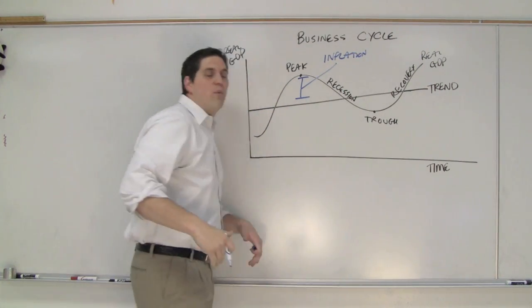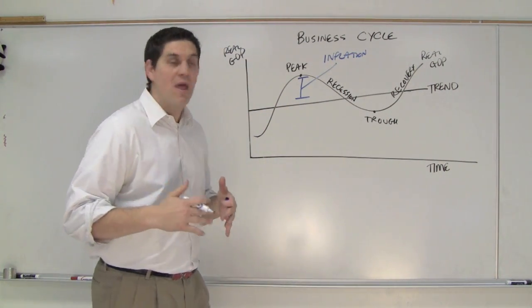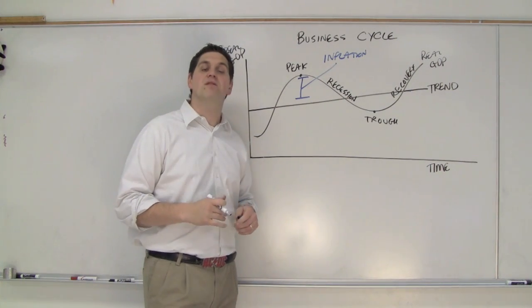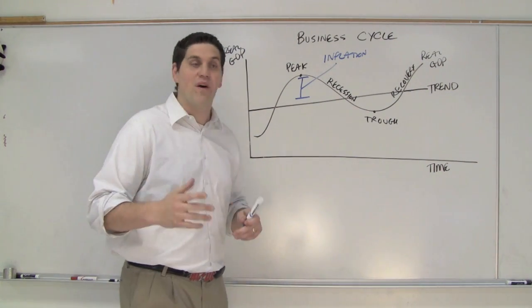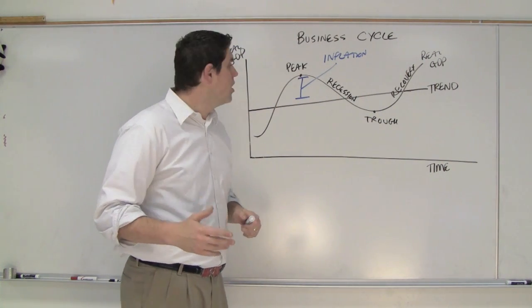Why? Well, when we have a higher sped-up economy, the GDP is real high, the economy is speeding up, that's going to put upward pressure on the prices of resources and labor and workers and stuff like that. And that means we're going to have a sped-up economy that's going to lead to higher prices. Inflation, right?